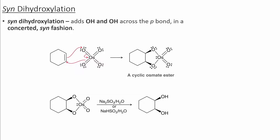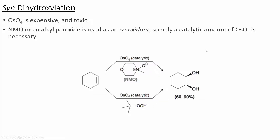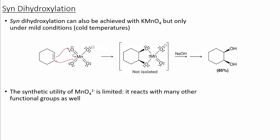There are multiple sets of conditions that we can use for this reaction. Osmium tetraoxide is the first reagent — it is expensive and toxic, and it also requires a co-oxidant. Because of all these factors, syn-hydroxylation is often achieved with potassium permanganate, which occurs under much more mild conditions and can react with a variety of other functional groups as well.